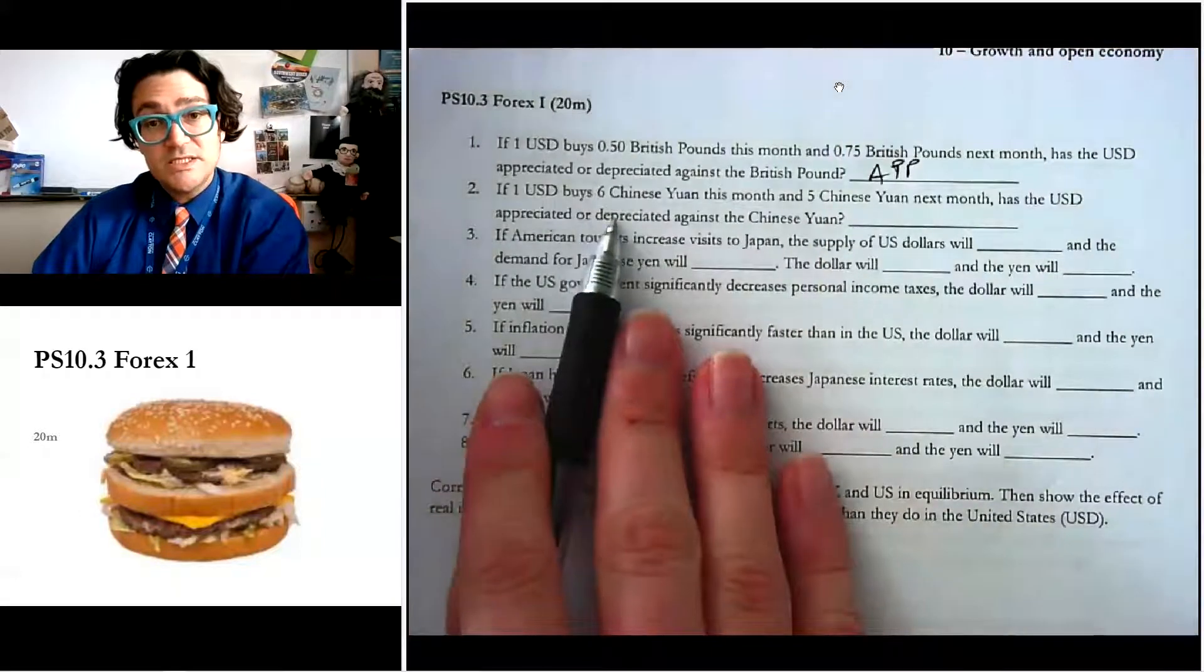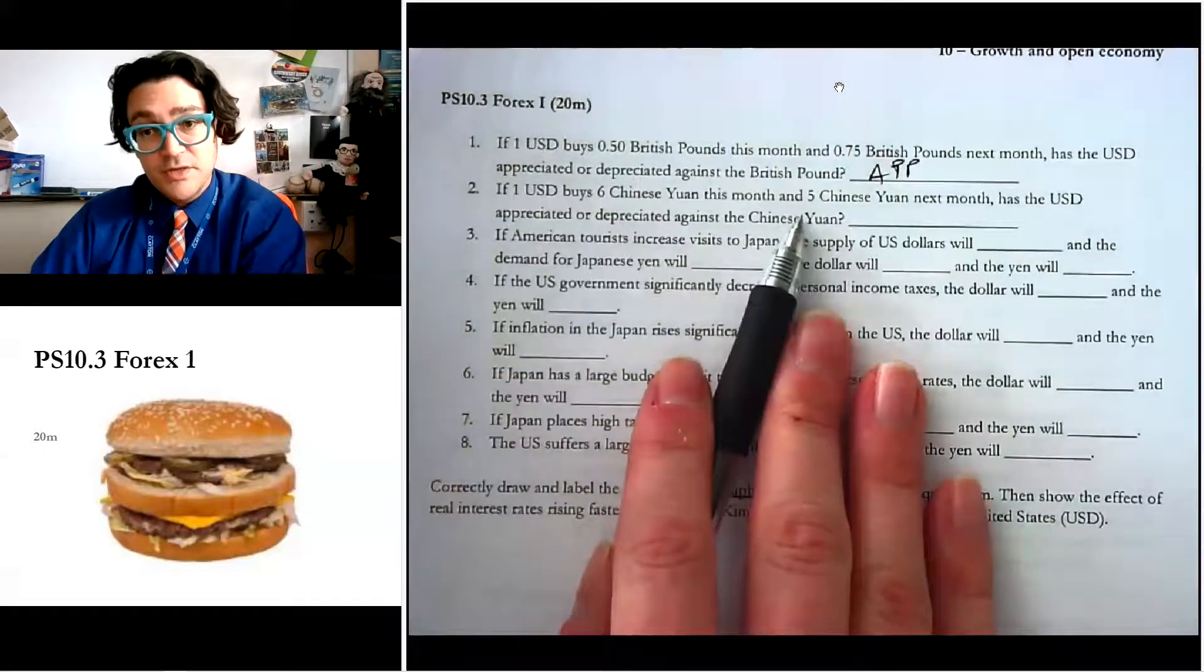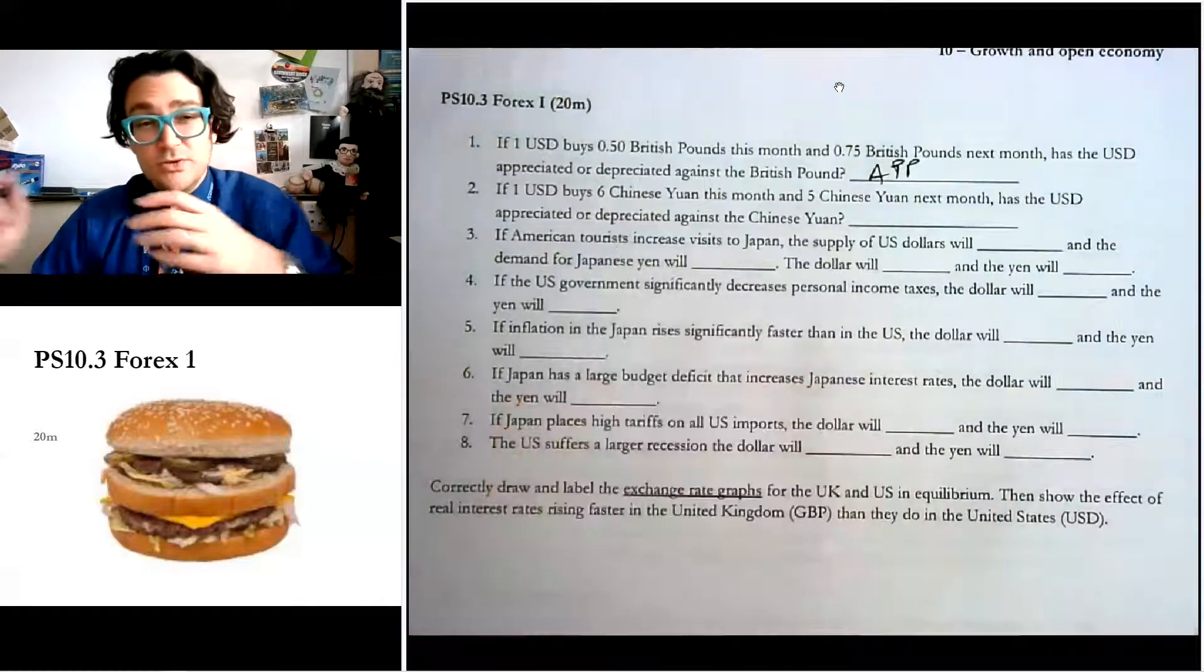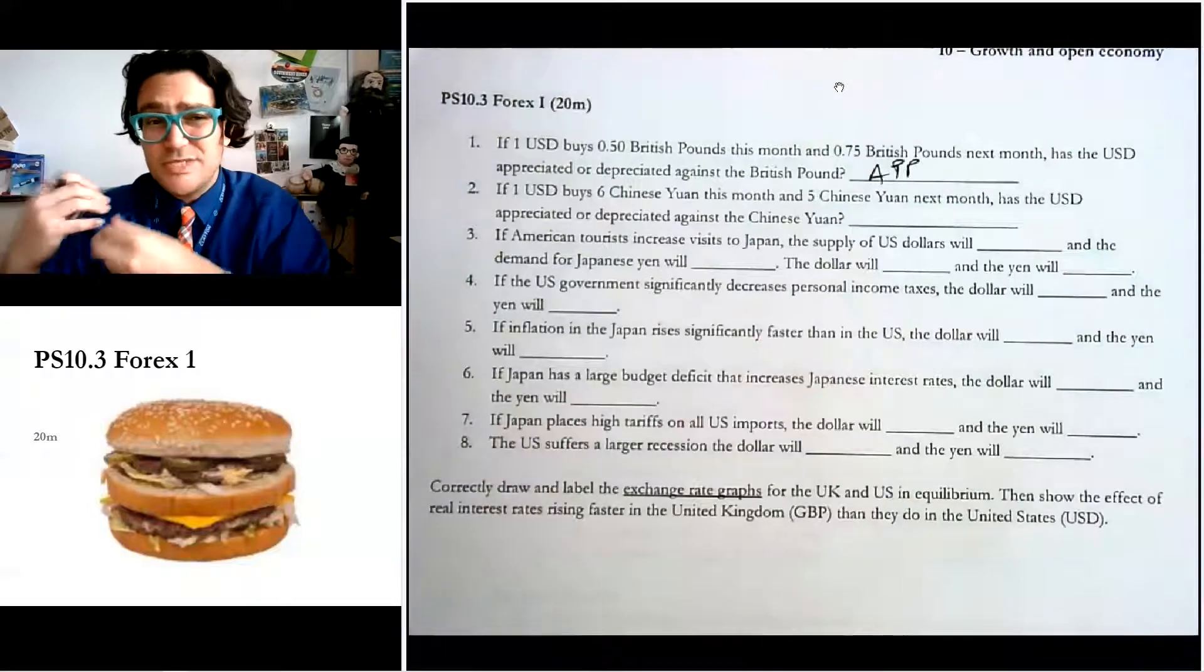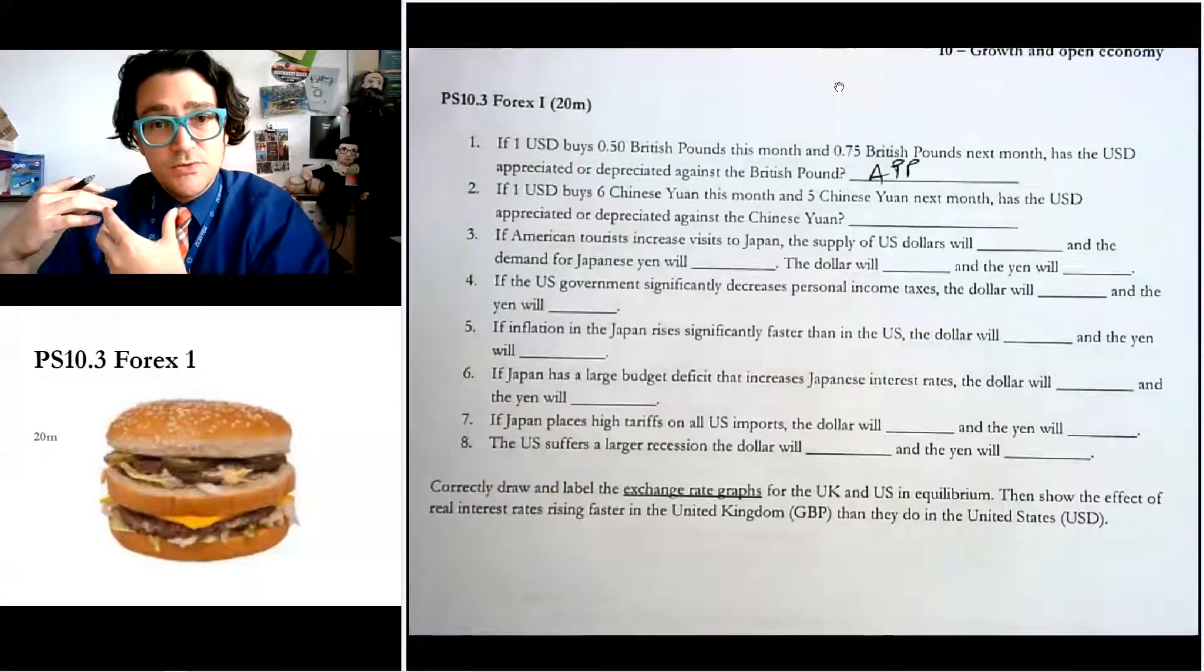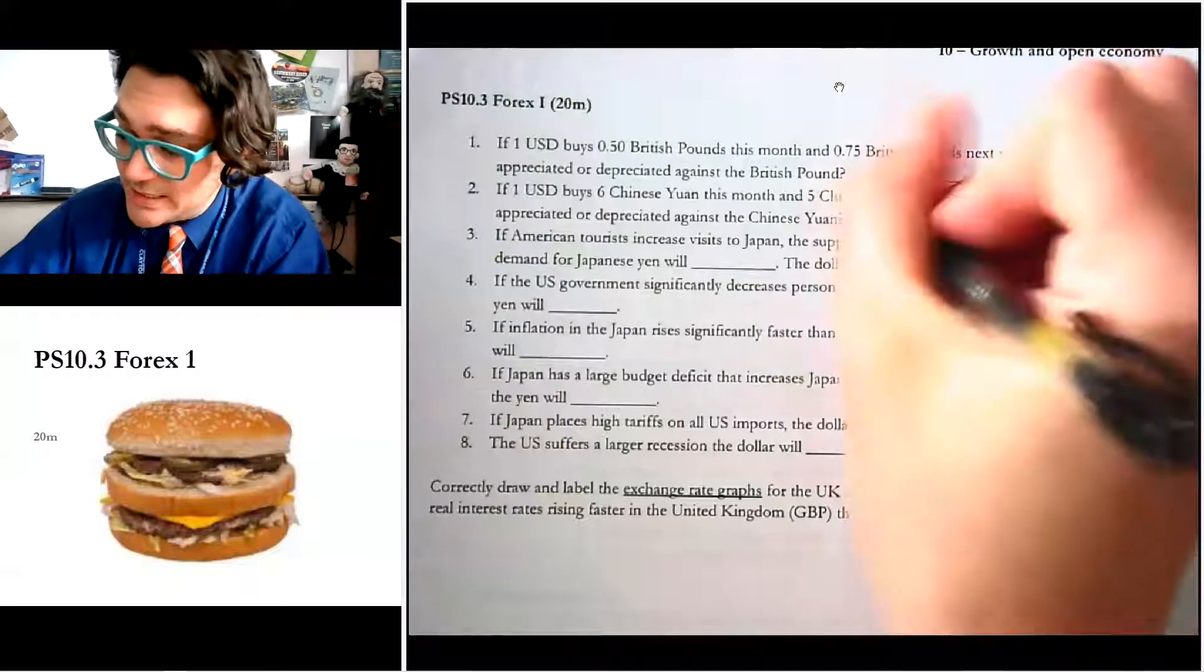If the dollar buys six yuan this month and five yuan next month, has the dollar appreciated or depreciated? So does the dollar buy more or less currency? And well, now it buys less. So it's less valuable. So the dollar has depreciated against the yuan.